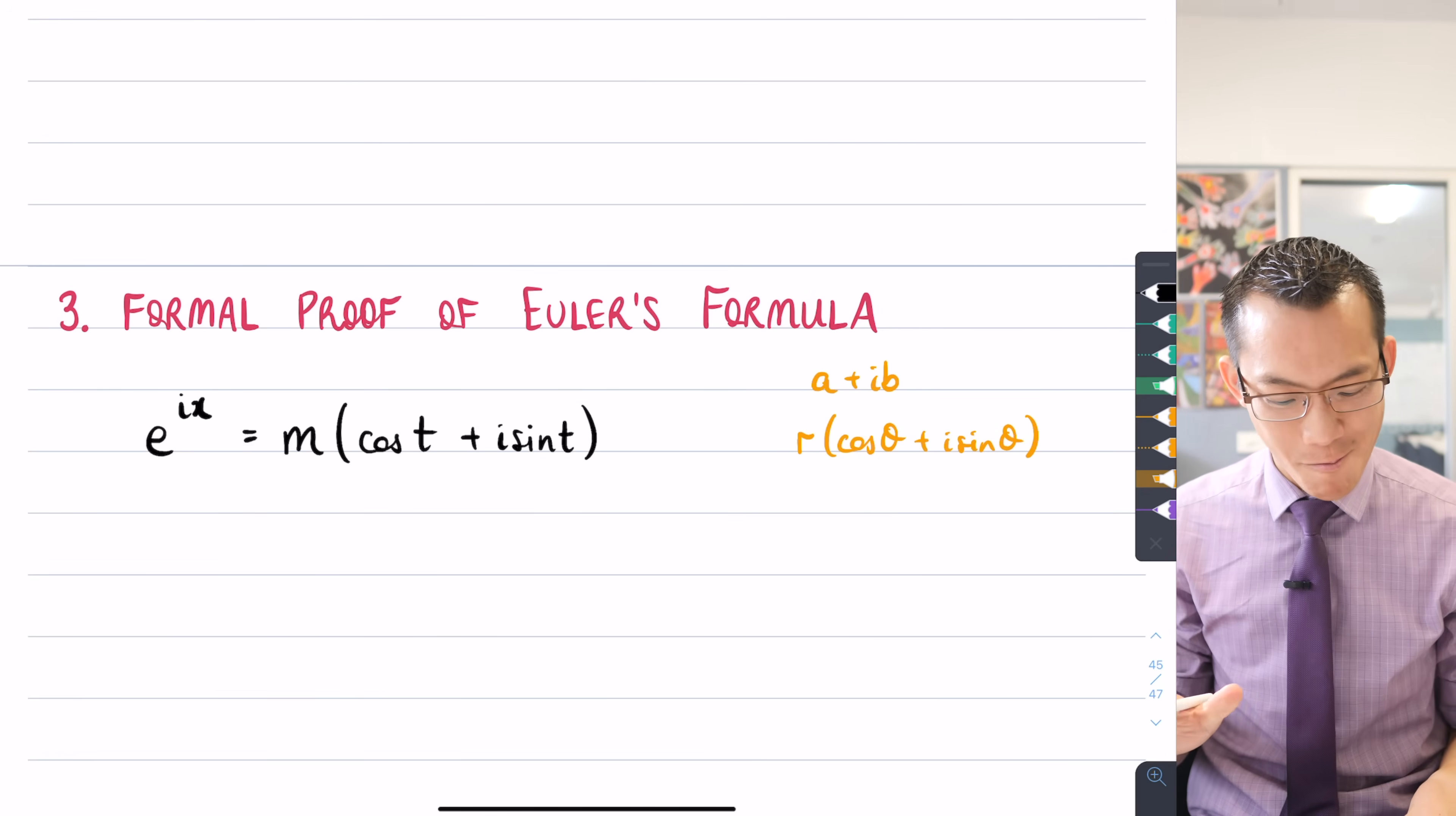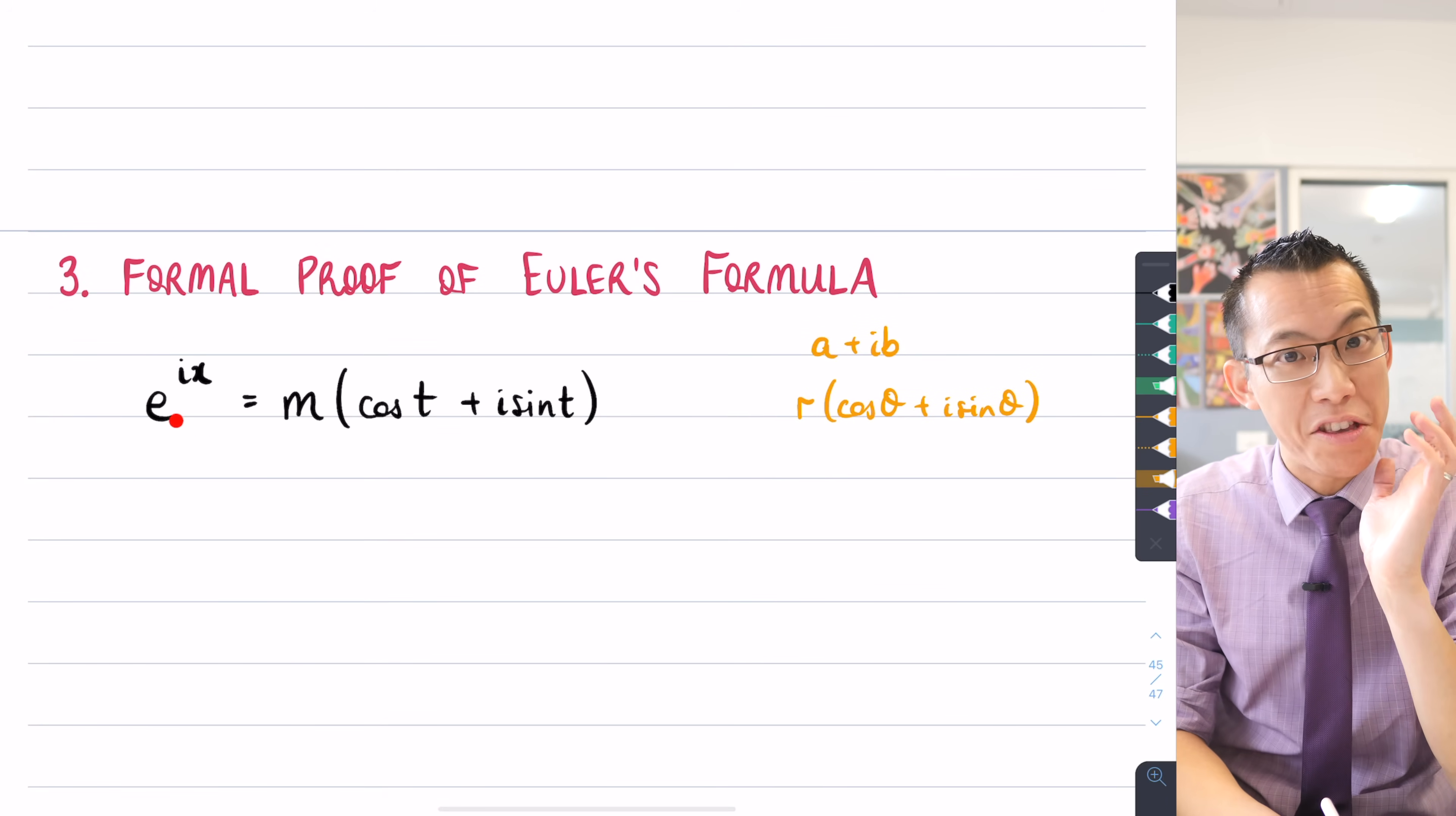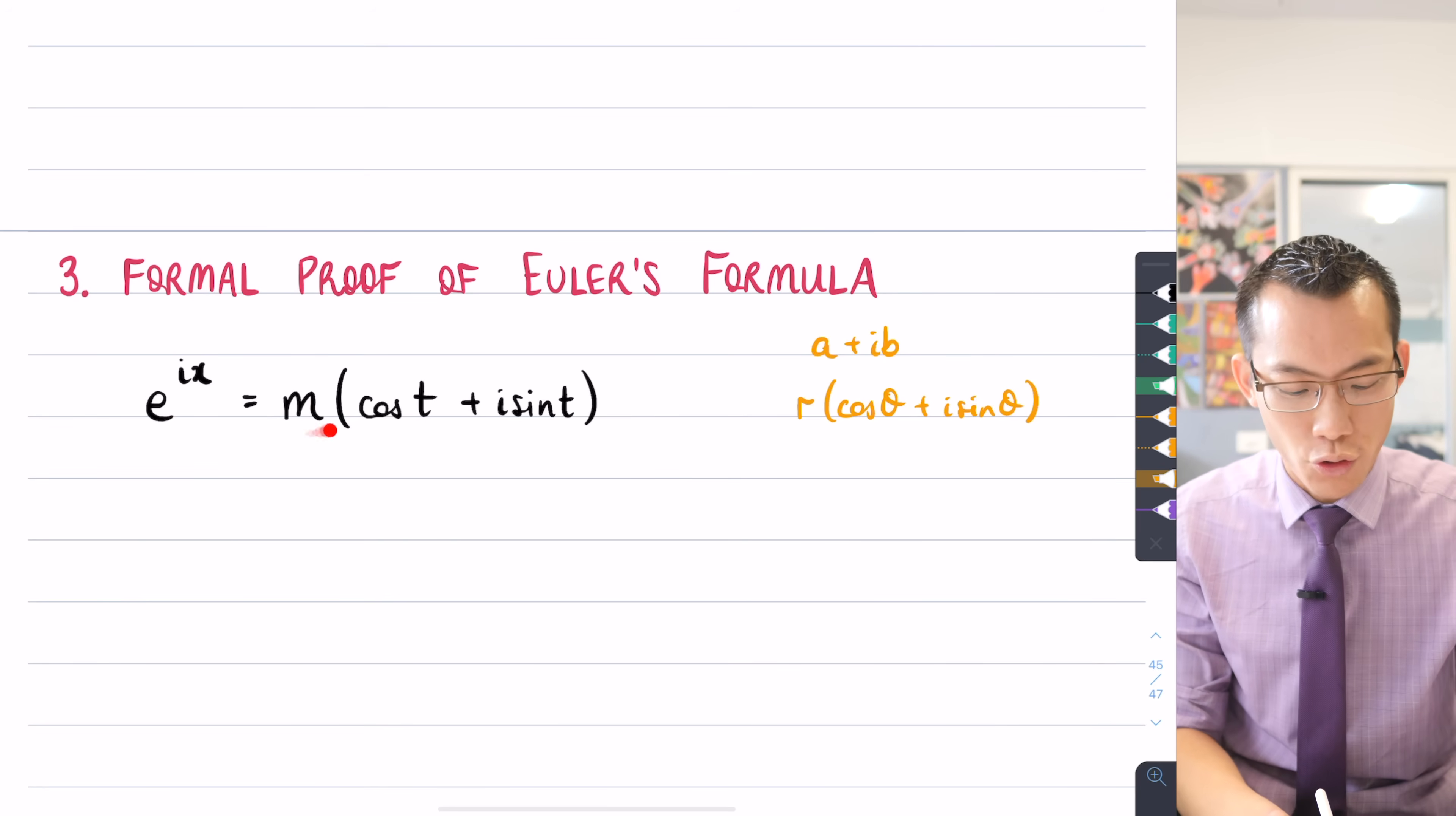So it's going to be cos of, instead of using theta, I'm going to use the letter t, plus i sine t. Now, what are we saying here? We've got this expression on the left-hand side, but you're putting complex numbers into it and expecting to get complex numbers out. And every complex number that we can think of anywhere on the complex plane can be expressed in this form for some particular modulus and some particular argument.